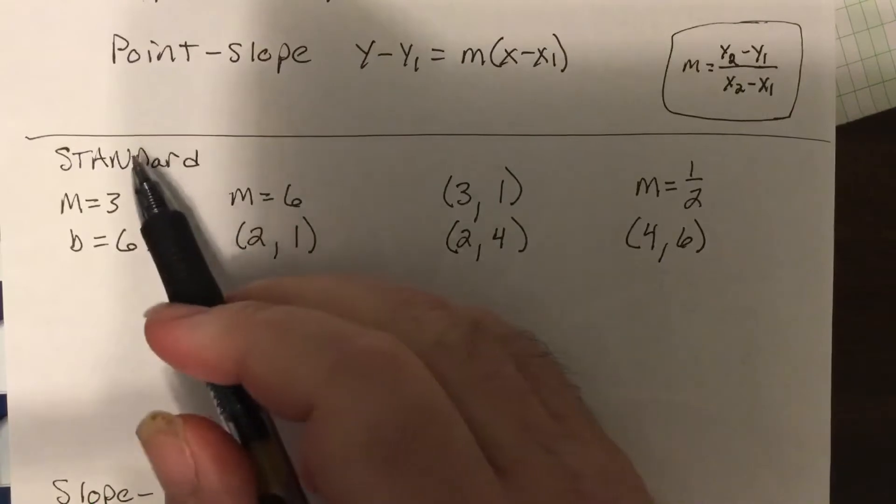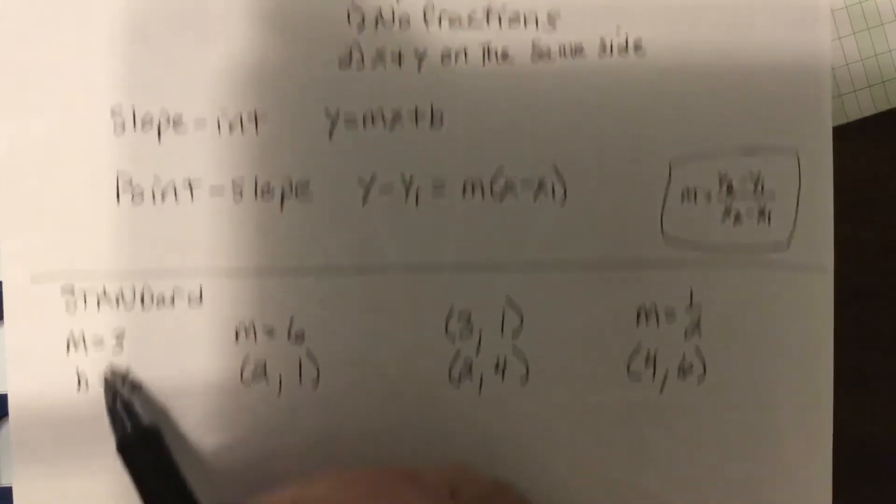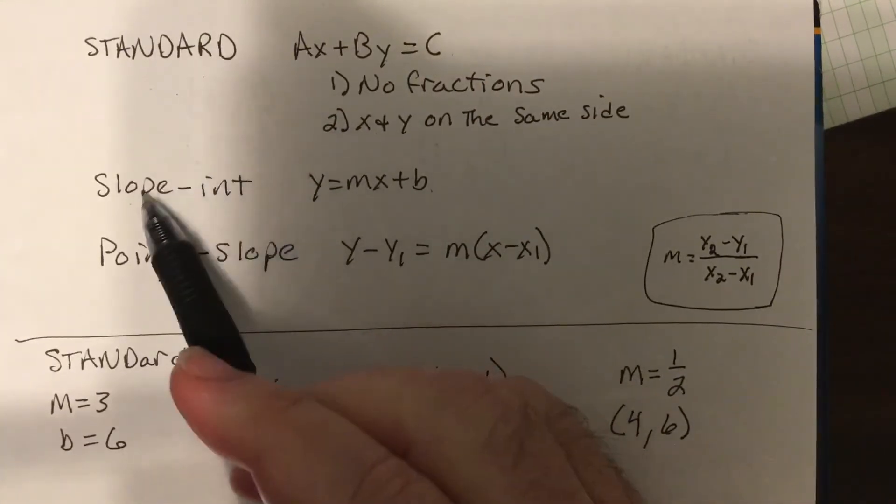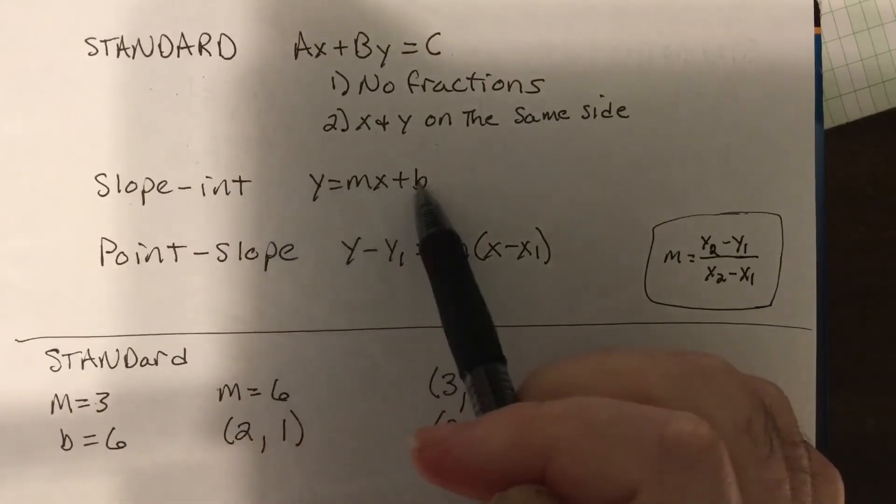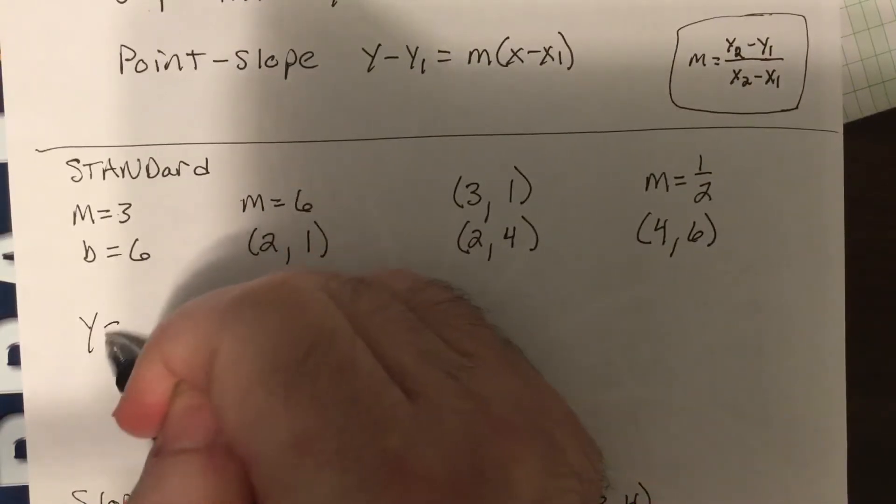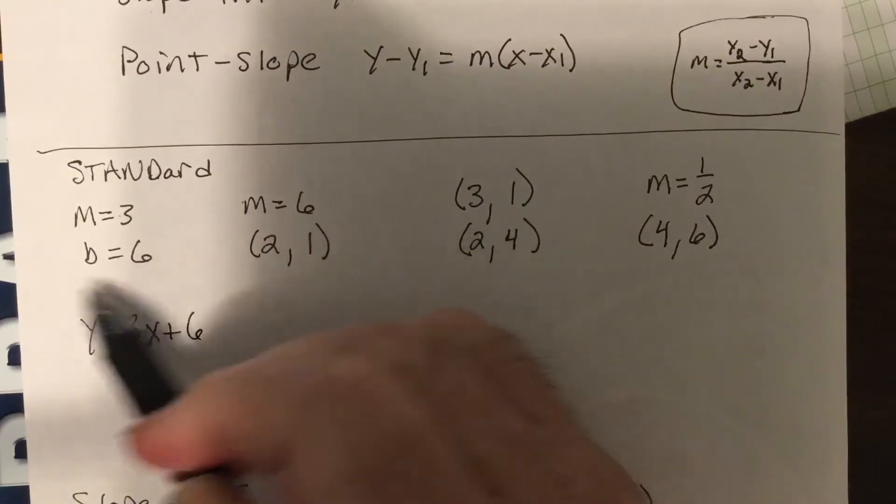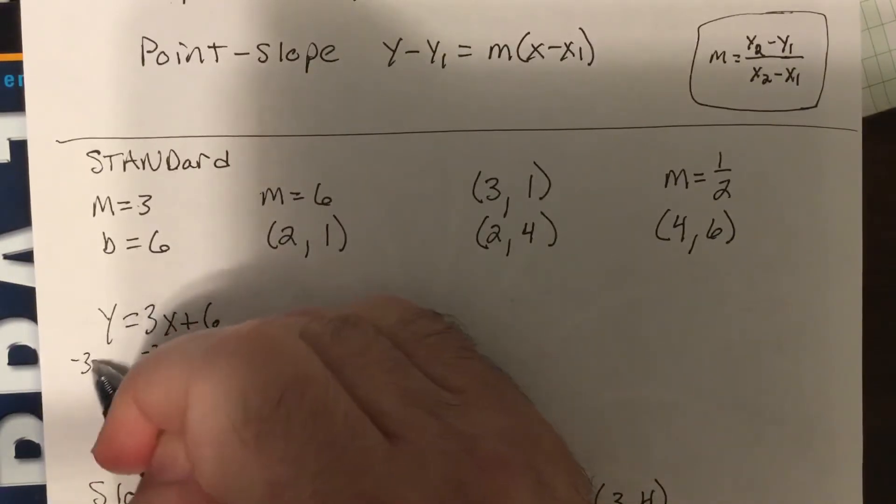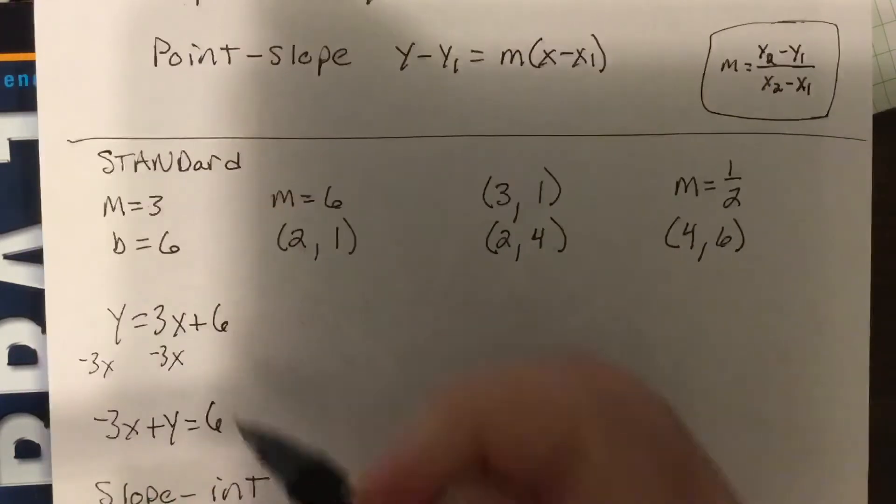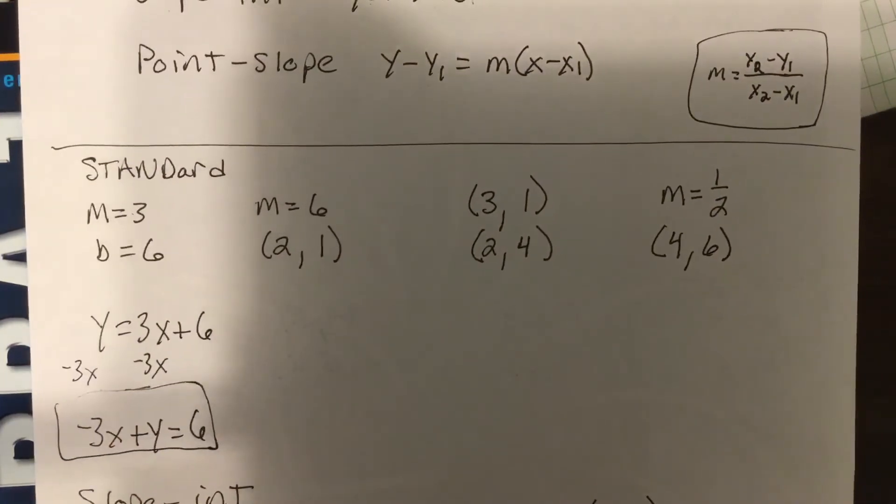So, let's say we want our answer to be in standard form. I'm given a slope, I'm given an intercept. Which one do you think we start with? Standard, slope-intercept, or point-slope? Well, if we're given a slope and intercept, we start with slope-intercept. So you just plug it in. y equals 3x plus 6. Now, to get standard, I want the x and y's on one side and no fractions. So I'm going to subtract 3x. So my answer is negative 3x plus y equals 6. I could take the opposite of everything. Or just leave it like that.